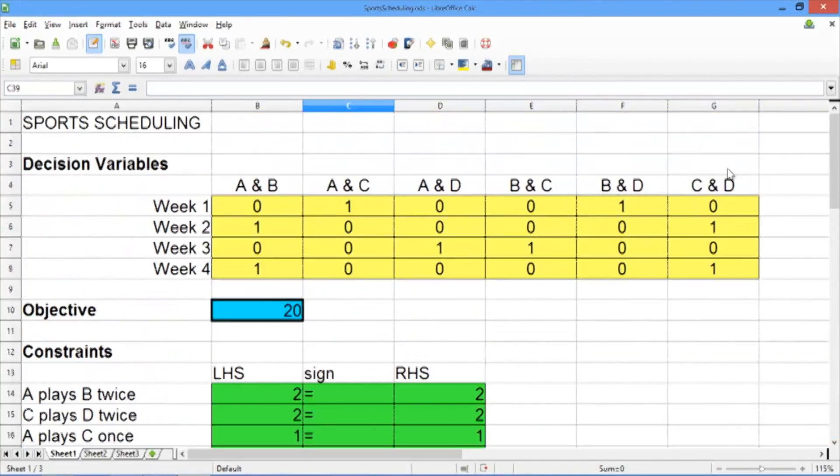Let's look at our new solution. The objective value is now 20, which is less than it was before. But now we have teams A and B playing in weeks 2 and 4, and teams C and D playing in weeks 2 and 4. So depending on your preferences as a decision maker, you might prefer the previous solution, which had a slightly higher objective, or this solution, which is a little more balanced.